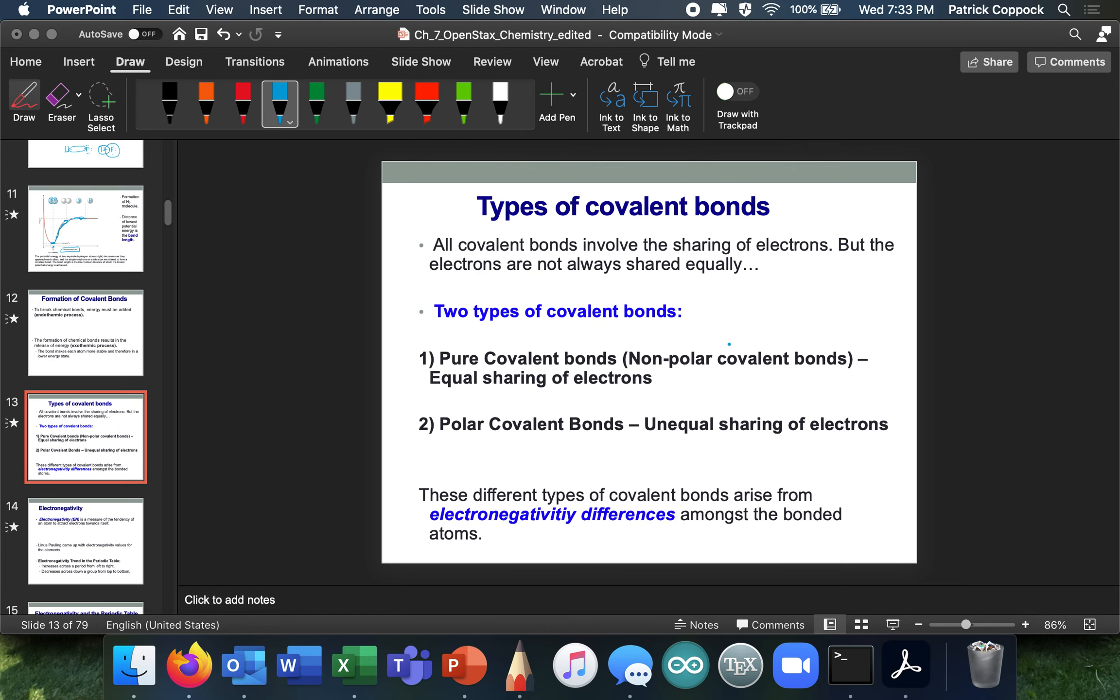All covalent bonds involve the sharing of electrons, but the electrons, this is important now, the electrons are not always shared equally. Sometimes one atom gets more of it than the other. So in our HF instance, this fluorine actually hogs the electrons a little bit more than the hydrogen. And so if they hold them just the same, it's considered a pure covalent bond. It's nonpolar if it's equal sharing of electrons. Equal sharing of electrons is purely covalent. Now, if it's unequal, which I kind of indicated up here, where fluorine's getting more than its fair share, we might call it a polar covalent bond. And this derives from a feature that we're going to call electronegativity.